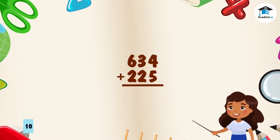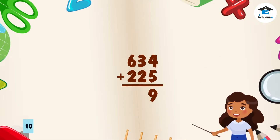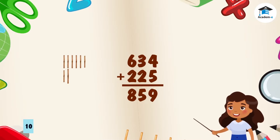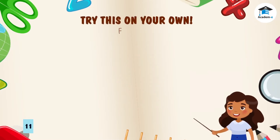Second example: let's add 634 and 225. First, in the ones column: four plus five — we get nine. Counting: one through nine. Next, in the tens column: three plus two — we get five. Counting: one through five. And lastly, in the hundreds column: six plus two — we get eight. Counting: one through eight. The sum is 859. Did you get it? Bravo! Now try this on your own — get your pencil and paper.